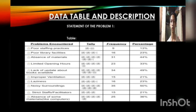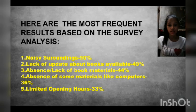On the next slide, data table and description are presented. The first column of our data table lists the problems encountered by the students in a library. At the second column, we have computed the tally of each problem listed as choices in the survey to find out the most common problems. The third column is the frequency, which is the numerical value of the tally, and the fourth column shows the computed percentages. According to the table results, we get the top 5 most common problems encountered by students whenever they go to the library. Here are the most frequent results based on survey analysis.